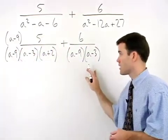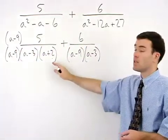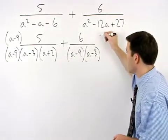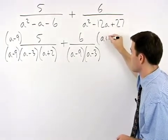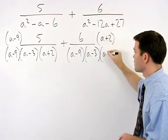Since the second denominator is missing an a plus 2, we multiply top and bottom of the second fraction by a plus 2.